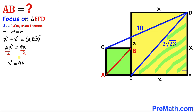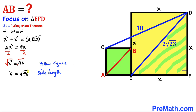Taking the square root of both sides, X = √46. This means the side length of the yellow square is √46, so all four sides of the yellow square are √46.